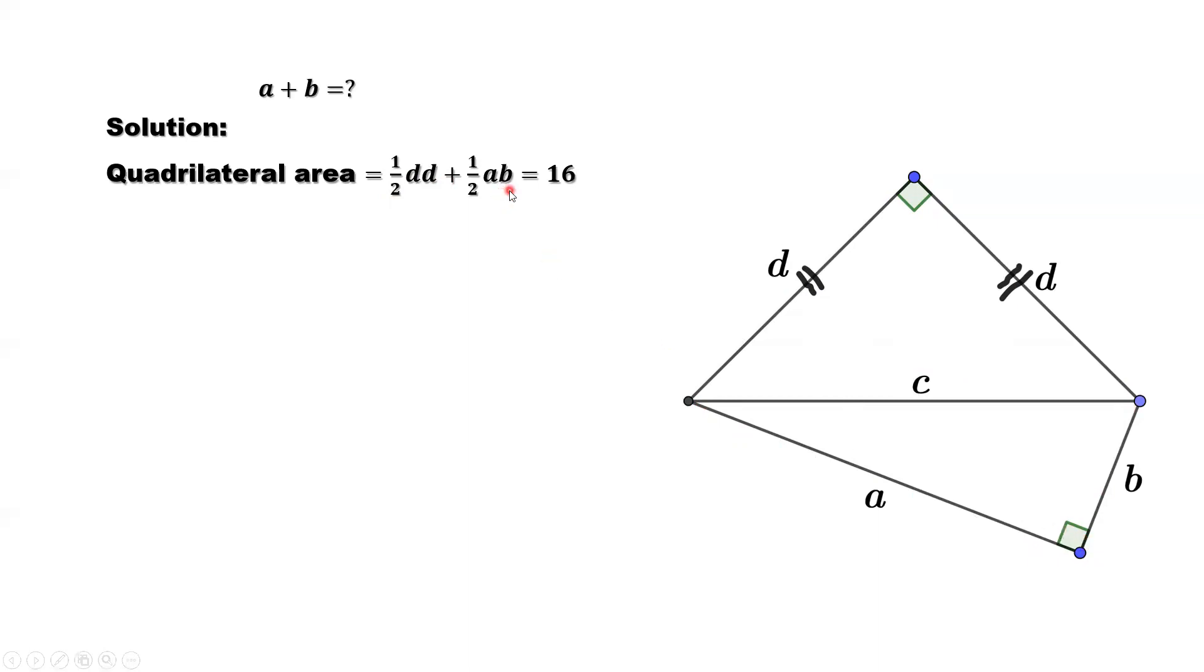From the given condition, we know the total area equals 16. We have d² + ab = 32.